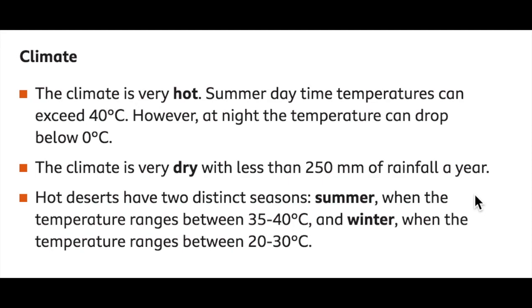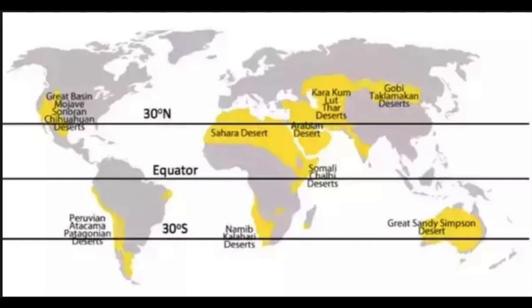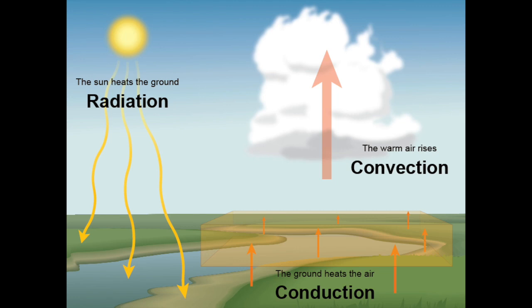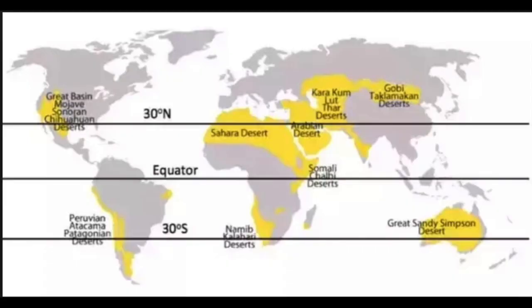To understand why deserts are where they are, we must first look at global atmospheric circulation. The sun's rays at the equator are much more concentrated than other places around the earth, so here you will find the hottest temperatures. As the sun heats the ground at the equator, the ground heats the air above it. Hot air rises, travelling upwards until it is too far from the heat source and cools down. When it cools, the air condenses into clouds, which instantly precipitate at the equator. These clouds then have no moisture, so as they travel north and south they have no water left in them, which is why we see the dryness of the deserts. The deserts are also fairly close to the equator, so the sun's rays heat them up further.